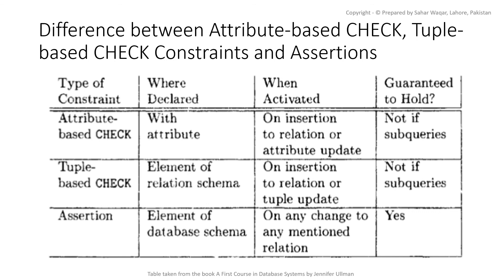To summarize: attribute-based checks are written in front of the attribute and are only triggered on INSERT to the relation or UPDATE to that attribute. Tuple-based check constraints are written as schema elements and fire on INSERT or on any attribute change in a tuple. Assertions are written as elements of the database schema separately from relations and fire with any change to any mentioned relation. Importantly, attribute and tuple-based checks are not fired if changes in other tables cause them to become false, so they are not guaranteed to hold when subqueries are involved. Assertions, however, are guaranteed to hold even with subqueries, as they fire whenever any referenced table changes.